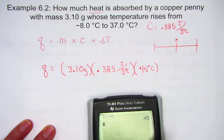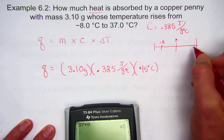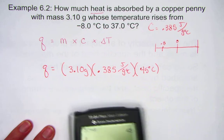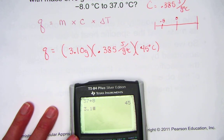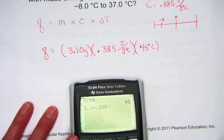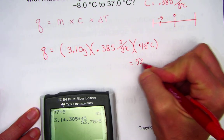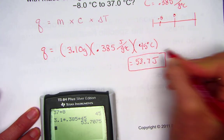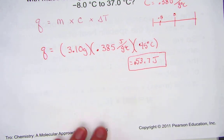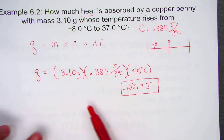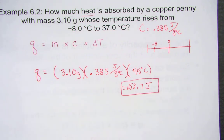On the number line, if we start at negative 8, we have to climb 8 units just to reach zero, and 37 more to get to 37 degrees. The total change in temperature is 45 degrees Celsius. Calculating: 3.1 grams times 0.385 joules per gram Celsius times 45 degrees — our answer is 53.7 joules of energy. The positive sign indicates the system is absorbing 53.7 joules of energy. Our strategy: multiply mass times specific heat times the change in temperature — MC delta T.